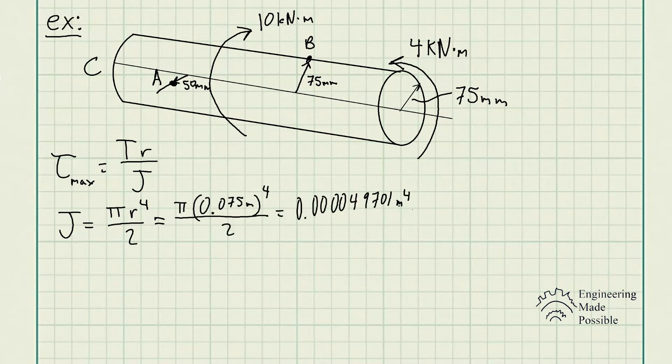Which gives us this small number, which the unit is meter to the fourth power. And keep in mind, I converted the millimeters into meters to keep it consistent and to simplify once we're solving for the shear stress.